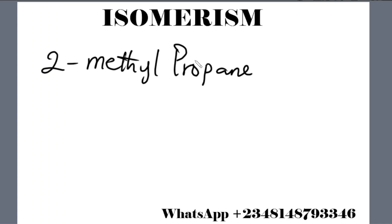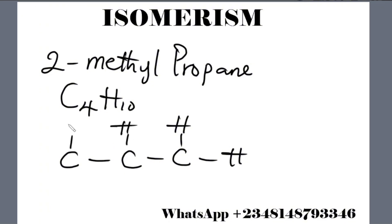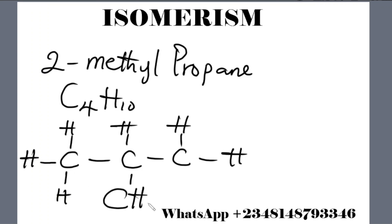Let's look at how 2-methylpropane relates to butane. 2-methylpropane is C4H10. The structural formula has 3 carbons in the main chain with a CH3 branch. If you look at this structure, we have 4 carbon atoms and 10 hydrogen atoms. Therefore, 2-methylpropane is the chain isomer for butane.